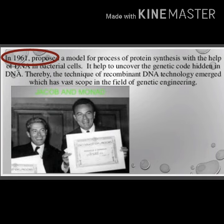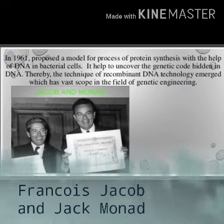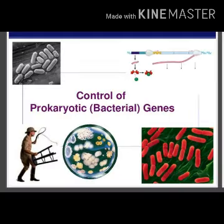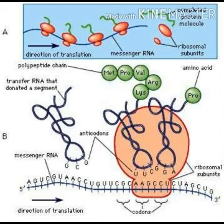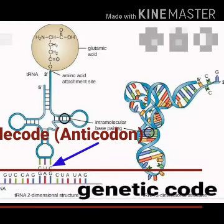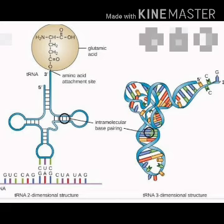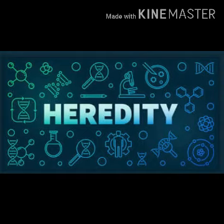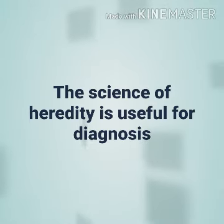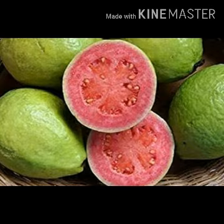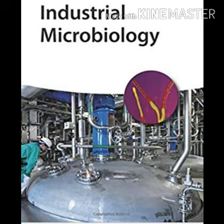The next scientist: in 1961, Francois Jacob and Jack Monod proposed a model for the process of protein synthesis with the help of DNA in bacterial cells — meaning how the formation of protein relates to DNA. It helped to decode the genetic code hidden in DNA. The science of heredity is useful for diagnosis, treatment and prevention of hereditary disorders, production of hybrid varieties of animals and plants, and industrial processes in which microbes are used.